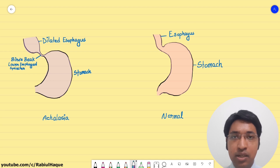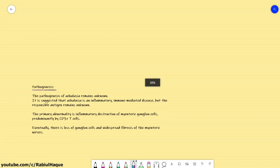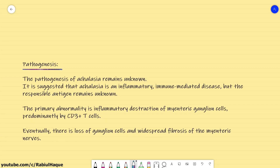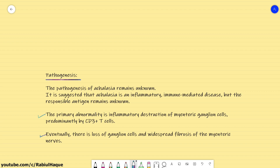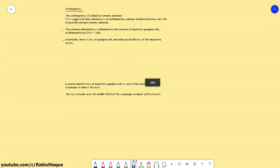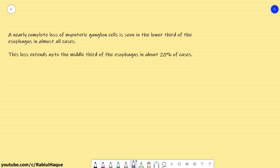Now that we have defined achalasia, let's move on to its pathogenesis. The pathogenesis of achalasia is still unknown. At present it is suggested that achalasia is an inflammatory immune-mediated disease; however, the antigens responsible are still unknown. The primary abnormality is inflammatory destruction of the ganglion cells of the myenteric nerve plexus, predominantly mediated by CD3-positive T lymphocytes. Eventually there is loss of ganglion cells and widespread fibrosis of the myenteric nerves. Nearly complete loss of myenteric ganglion cells is seen in the lower one-third of the esophagus in most cases, and this loss also extends to the middle one-third in about 20% of cases.